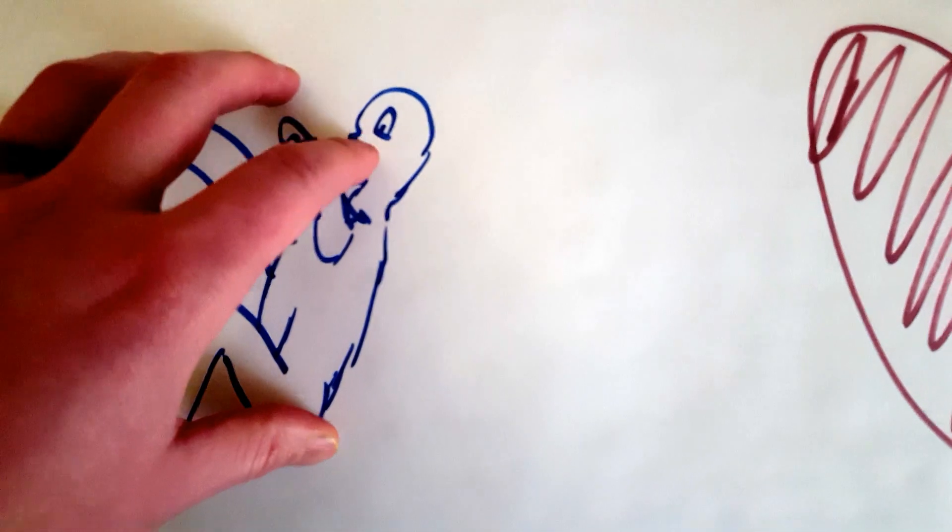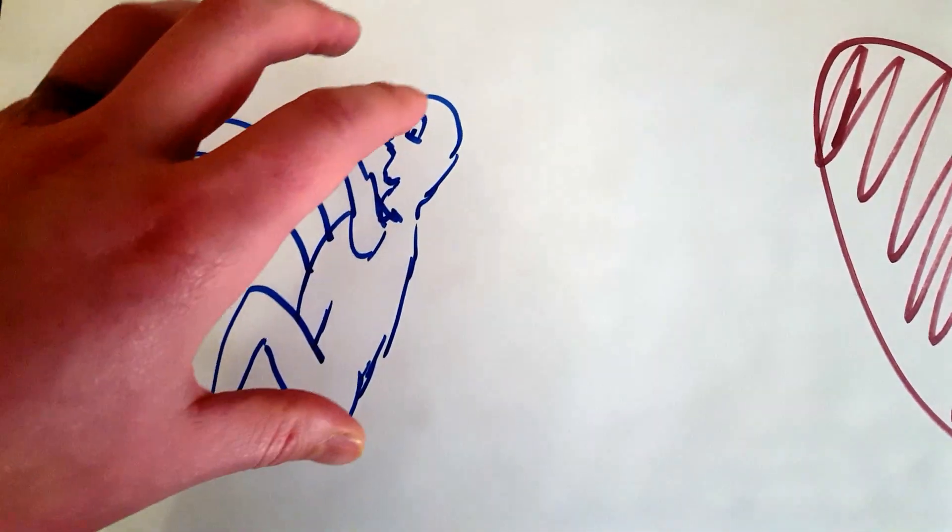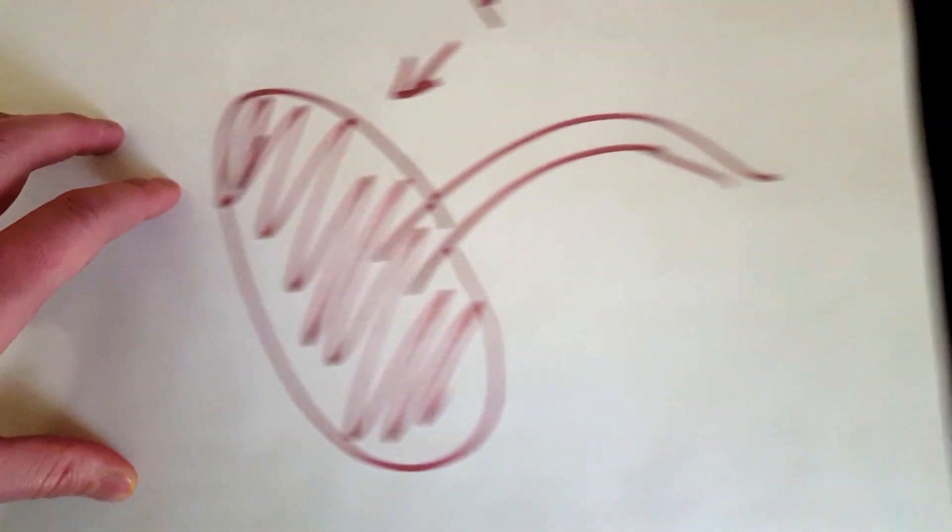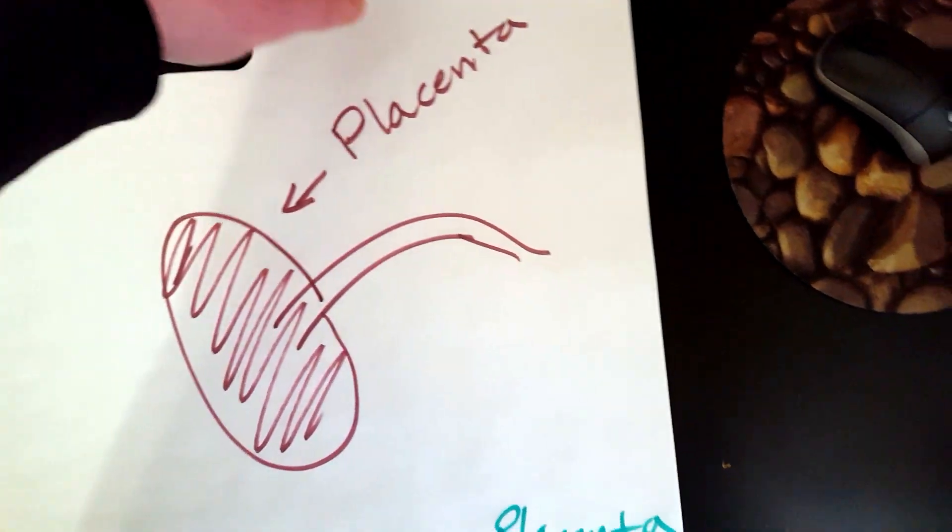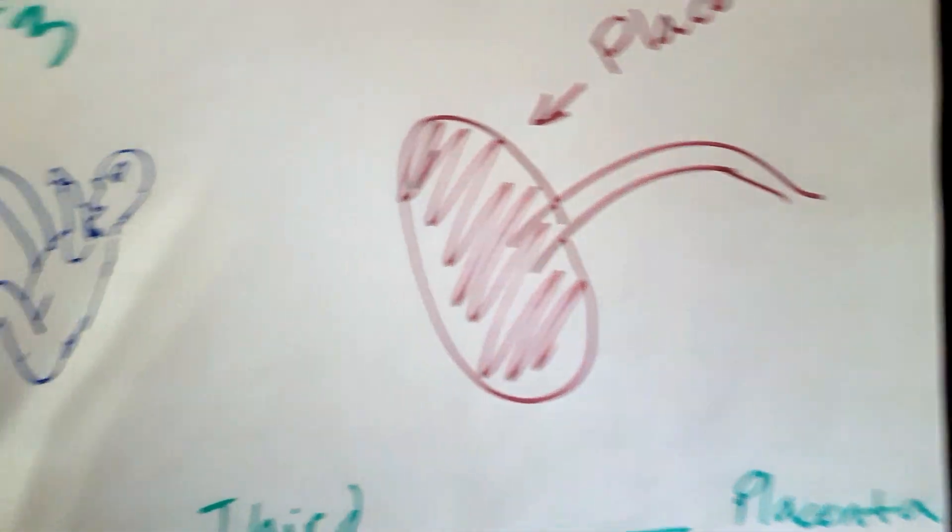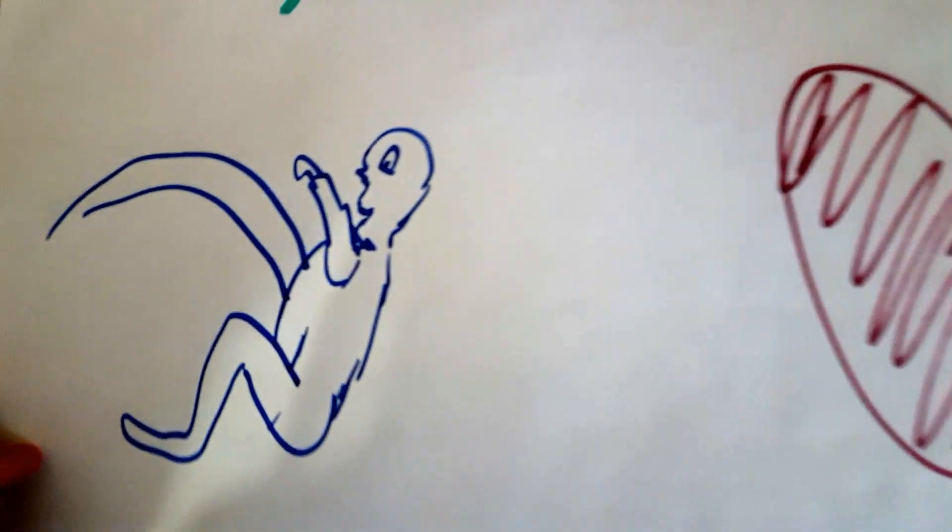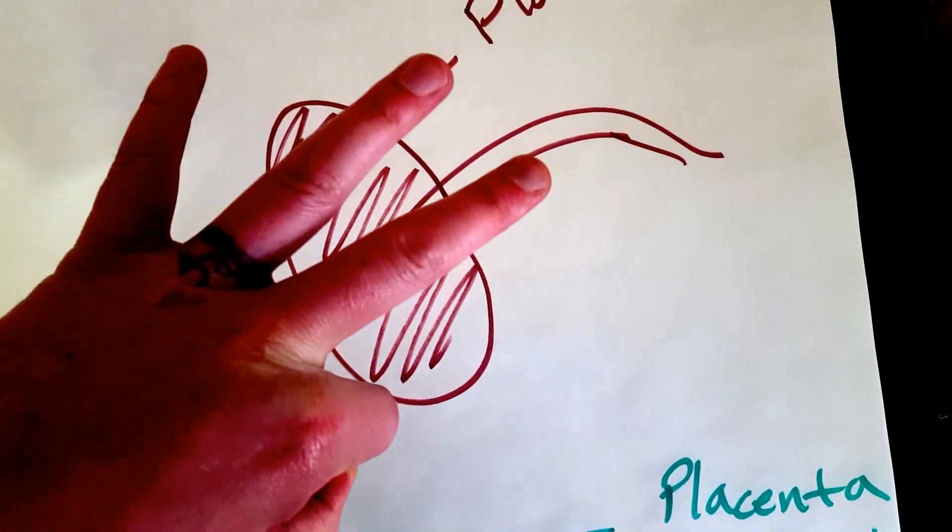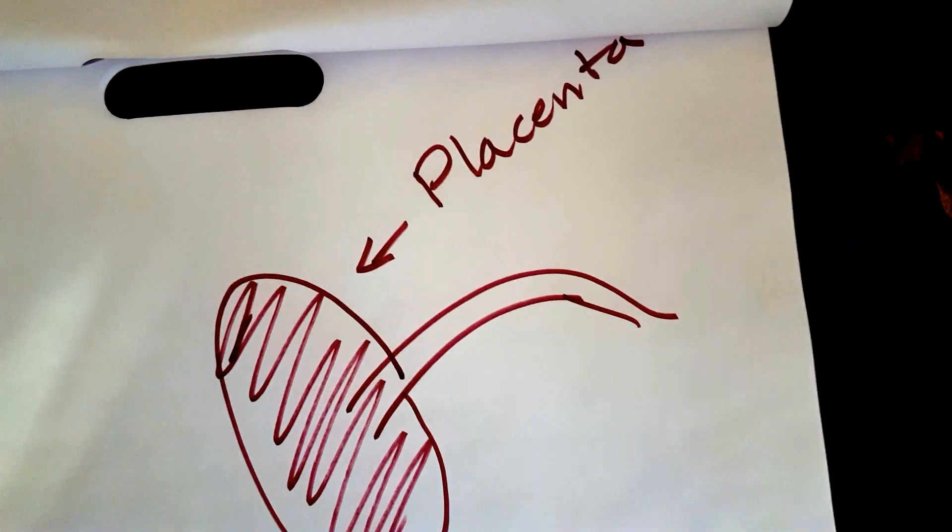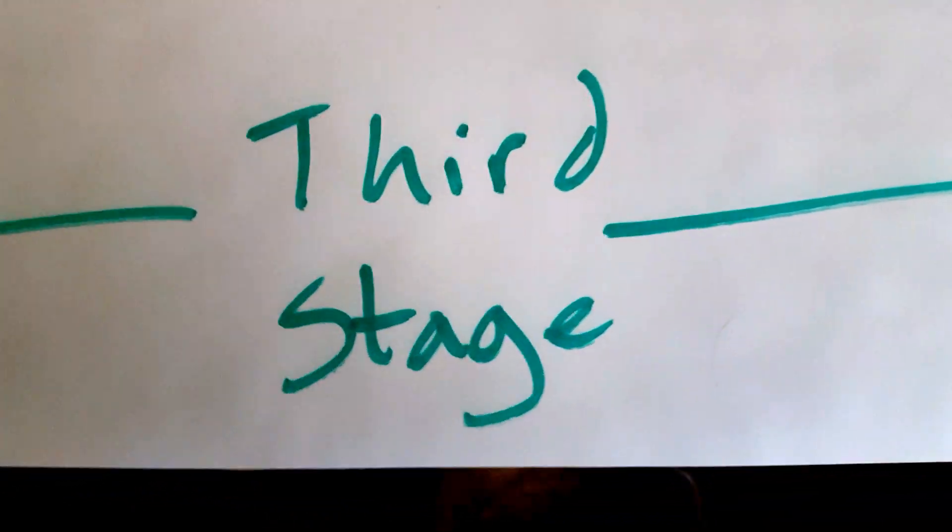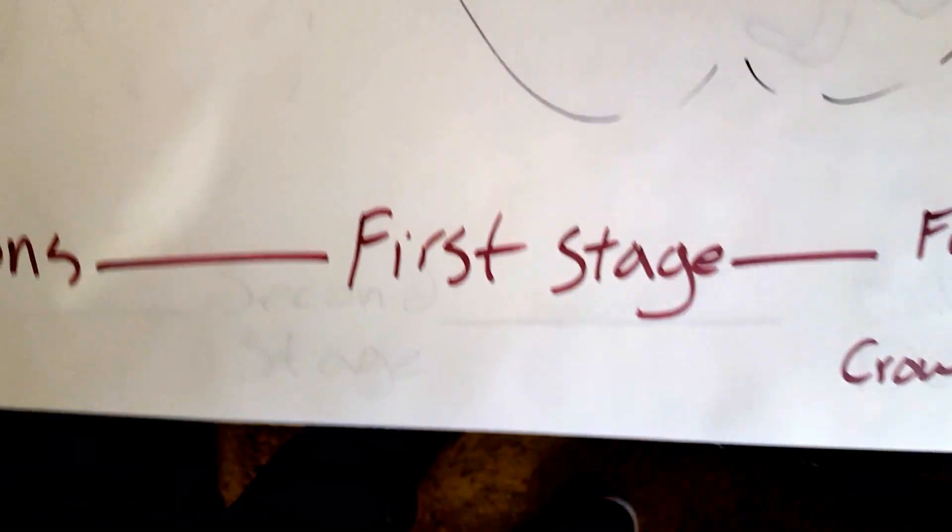Stage three: this is from baby delivery—it picks up from stage two—from baby delivery to the delivery of the placenta. This is the last, the final stage of the three-stage process for labor. So baby's delivered, then the placenta comes out. That right there is the third process.